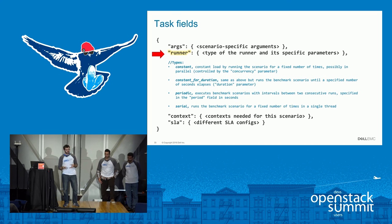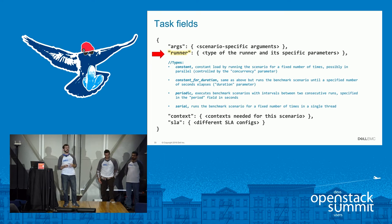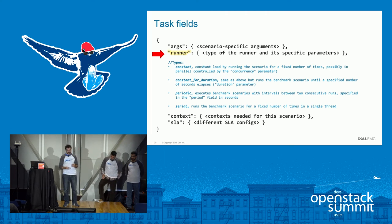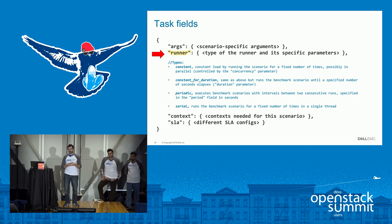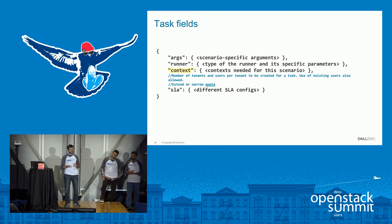Then we have the runner. There are four different types of runners: constant, constant_for_duration, periodic, or serial. In constant, we have a constant load running for a fixed number of times with a concurrency parameter to specify how many run in parallel. Constant_for_duration is the same but runs for a specific duration controlled by a duration parameter. Periodic executes a scenario with an interval between iterations specified by the period parameter. Serial executes operations serially in a single thread.